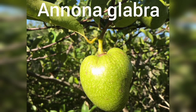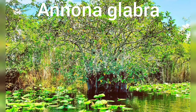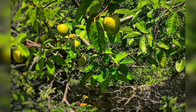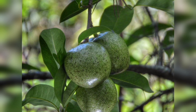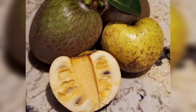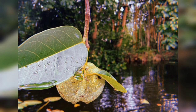Another variety is Anona glabra, commonly known as pond apple, distributed among South and Central America and West Indies. Commonly seen in humid lowland areas and near coastal areas. The leaves are boiled to make tea, which destroys flatworms and nematodes. The bark and leaves combined with the bark and leaves of Anona squamosa are used as a sedative. The seeds serve as insecticide.